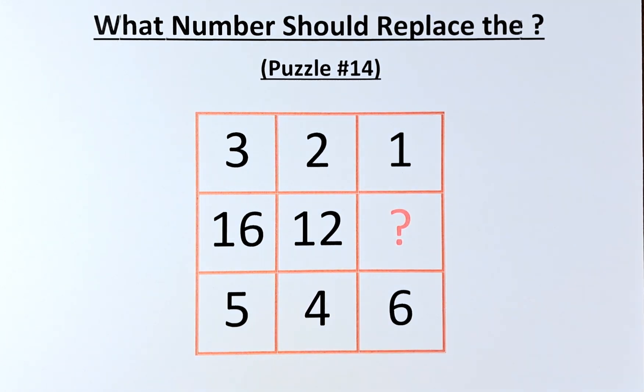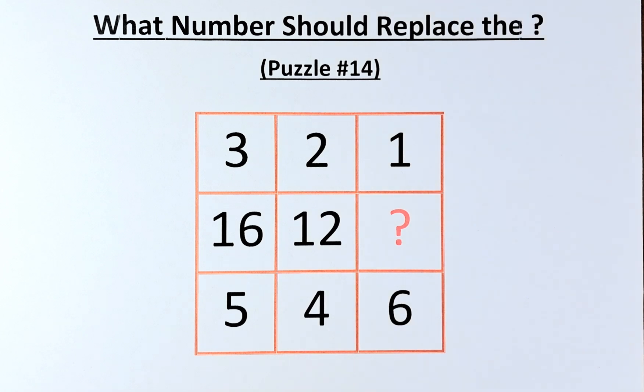The numbers in the puzzle are as follows. In the first row, we have 3, 2, and 1. In the second row, we have 16, 12, and a question mark. And in the last row, we have 5, 4, and 6.